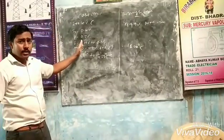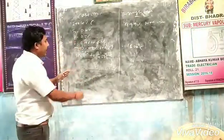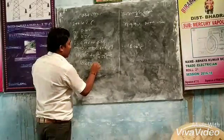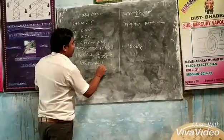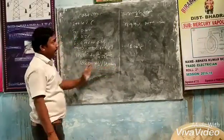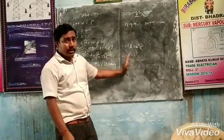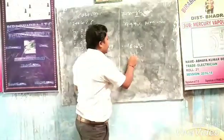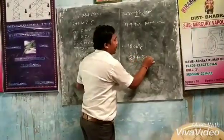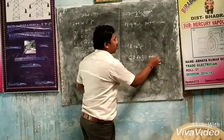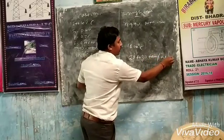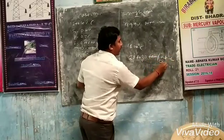Cast iron has a tensile strength of 6 to 50 kg per square centimeter. In the case of wrought iron, it has a tensile strength of 20 to 30 tons per kg per square centimeter.